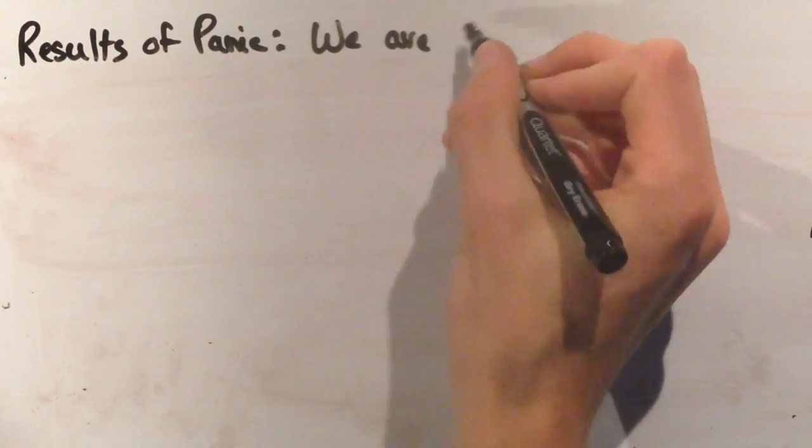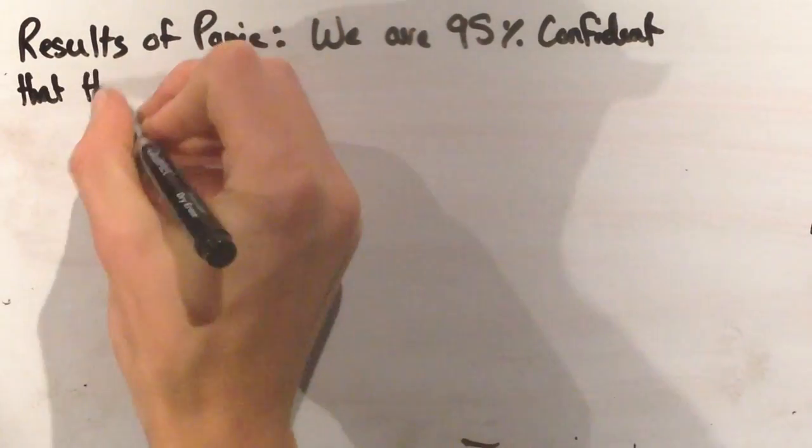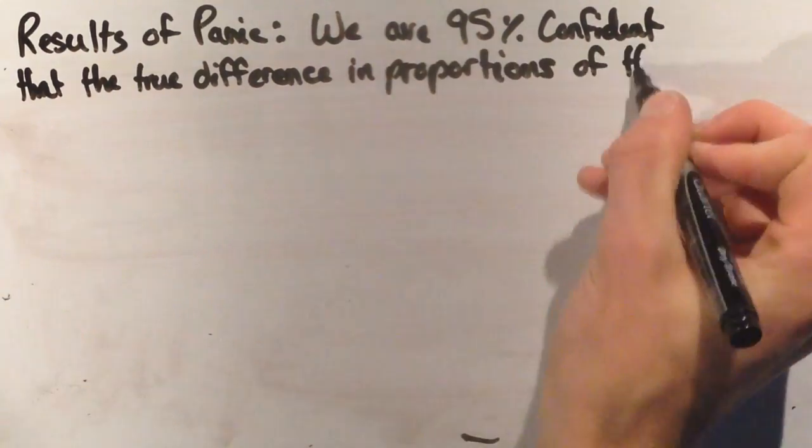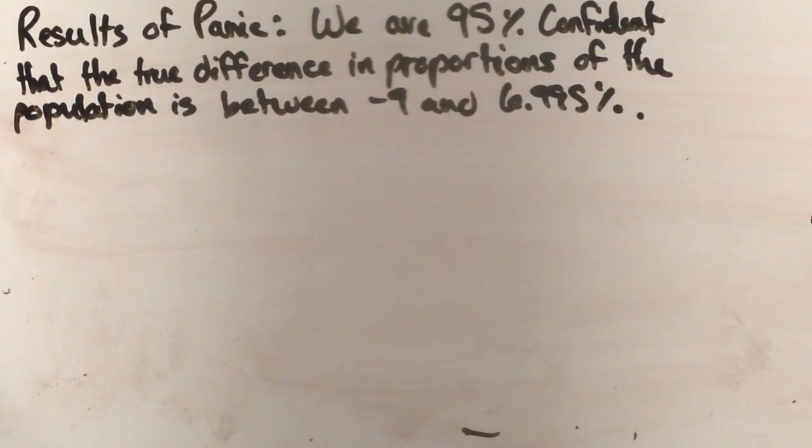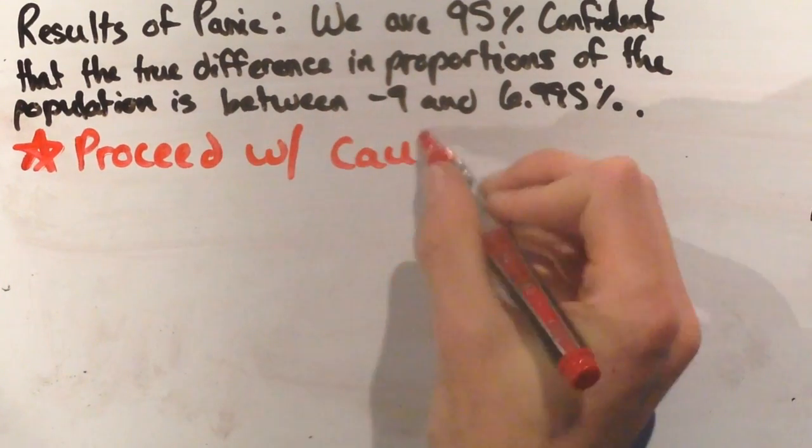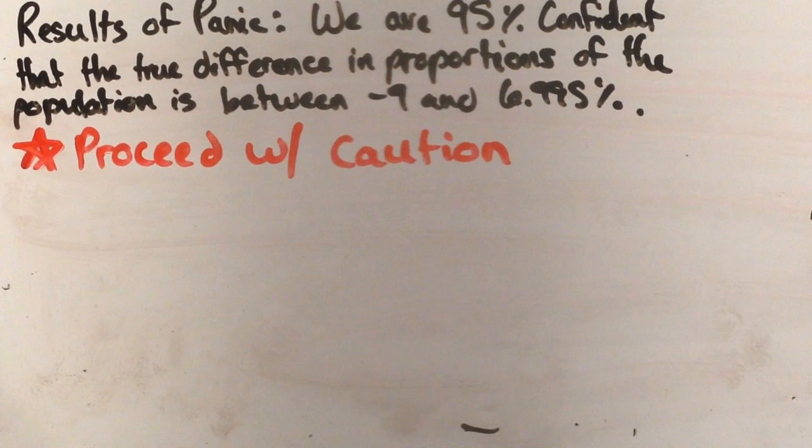After a quick panic, we were 95% confident that the true difference in proportions of the population is between negative 9 and 6.995%. Note that we were directed to proceed with caution after our small sample size did not ensure our data to be normal or independent.